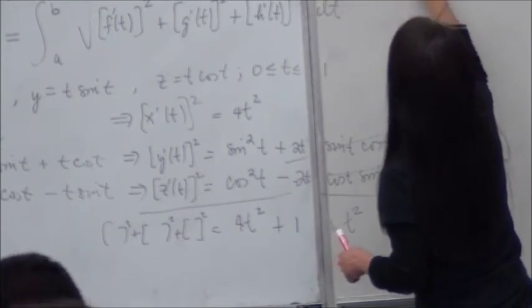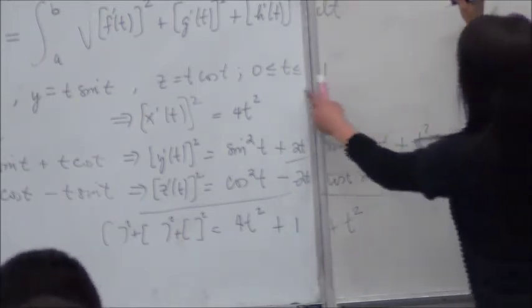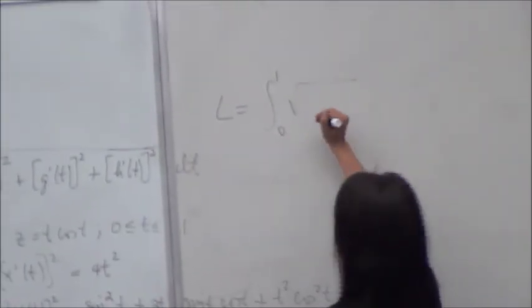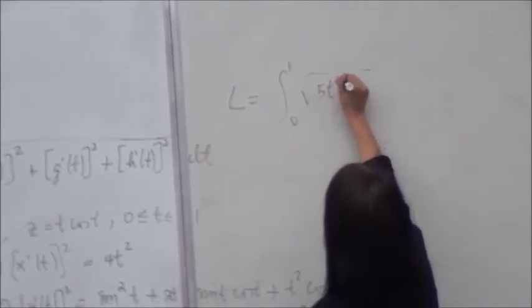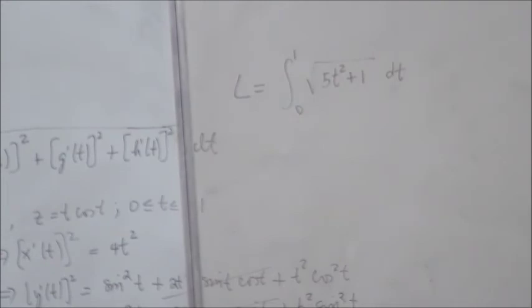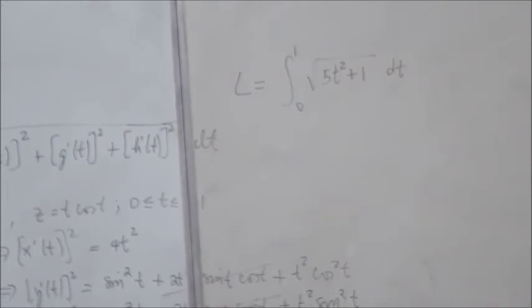For this problem, L will be what? Integral from zero to 1, zero to 1, A to B, of the square root of what? 5T squared plus 1 dt. Did you understand? So it's basically similar to what you were doing?